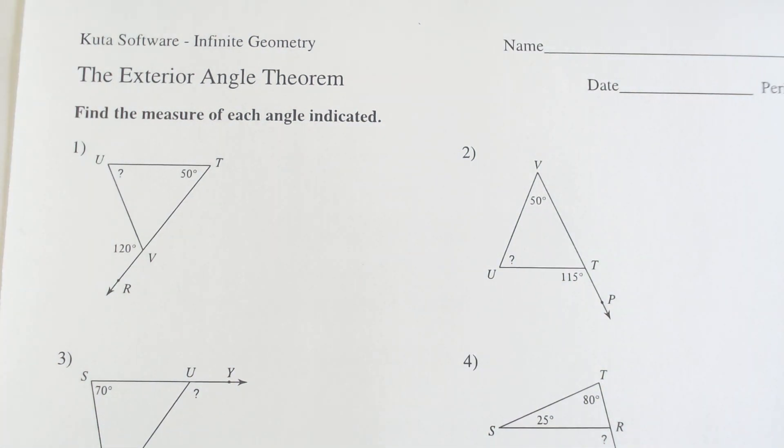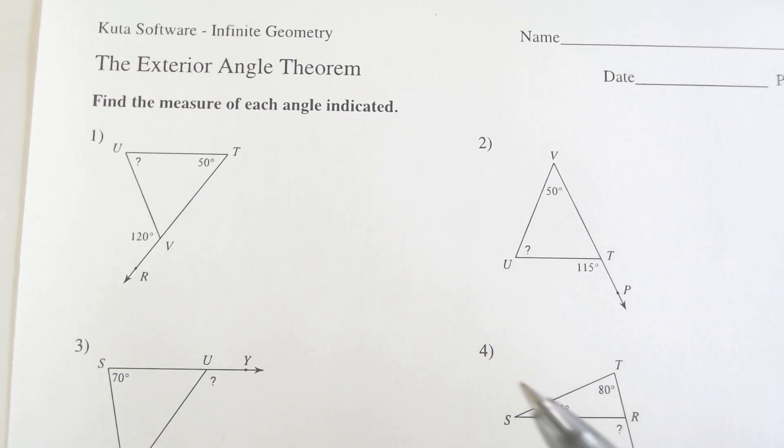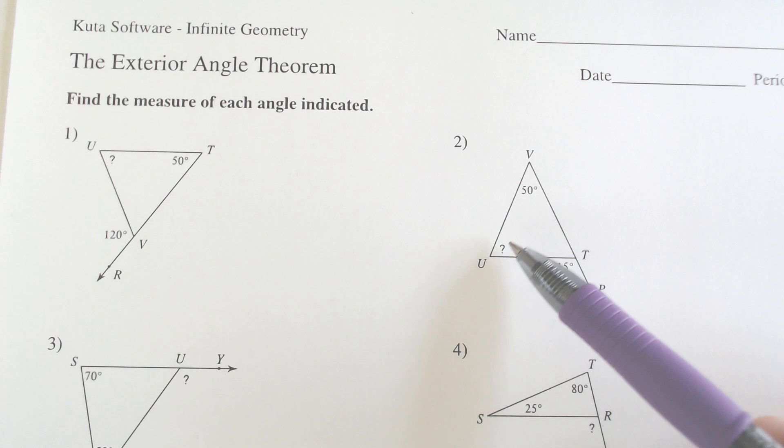Hello and welcome back to another episode of Math with Sohn. Today we are going to be doing the exterior angle theorem where if you have two of the angles inside a triangle,